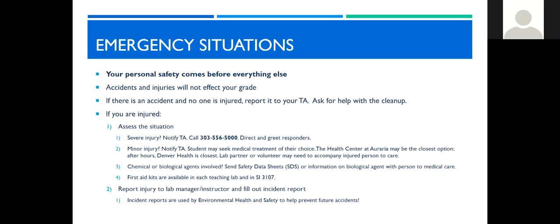If you need help with a spill, please ask for help. If you are injured, there are many different situations that can happen. If it's severe, of course notify your TA. Call the Auraria campus dispatch at 303-556-5000. Make sure you stay in the area to direct and greet responders if it's safe to do so. If you have a minor injury, notify your TA. You may seek the medical treatment of your choice. The health center at Auraria during normal business hours may be the closest option. After hours, Denver Health is the closest. Your lab partner or a volunteer from the lab must accompany you to your care.